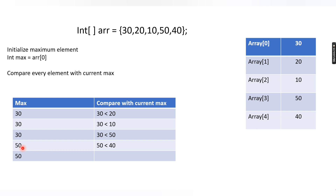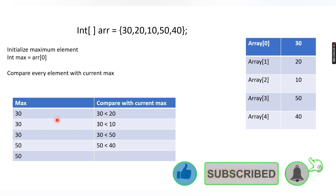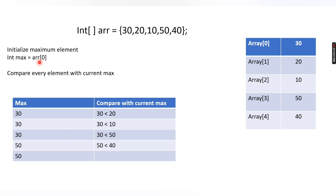To summarize the logic: the first step is to initialize the max variable to the first array index. You can assign array of 0, or any particular element, as max. Then you compare it with all remaining elements. If max is less than the current array element, you update max. In this case, 30 was less than 50, so we updated max to 50. Then we compare 50 with 40: 50 is not less than 40, so max stays 50.